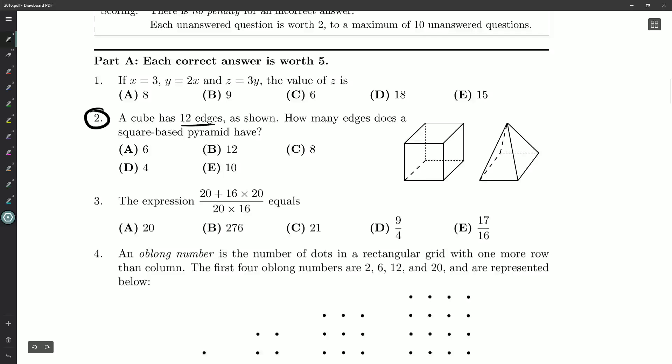A cube has 12 edges. 1, 2, 3, 4, 5, 6, 7, 8, 9, 10, 11, 12. How many edges does a square-based pyramid have?